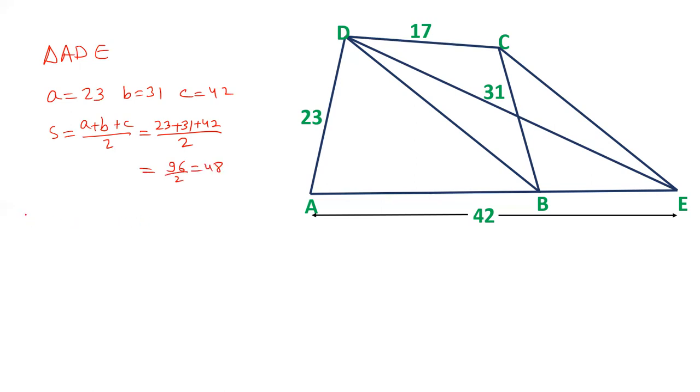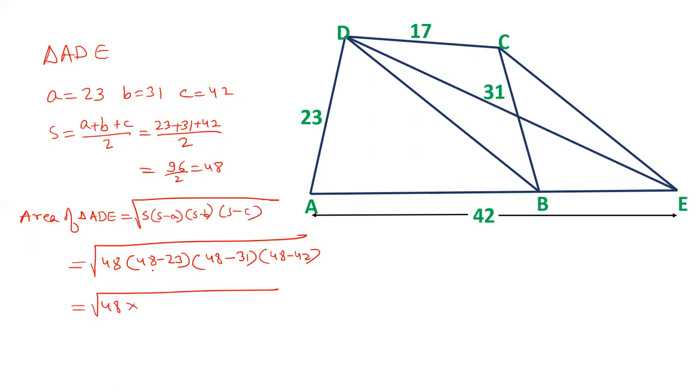And area of triangle ADE will be under root s times s minus a, s minus b, s minus c. s is 48, 48 minus 23, 48 minus 31, and 48 minus 42. We can write 48 into, the difference of these two is 25, difference of these two is 17, and difference of these two, 48 minus 42 is 6.